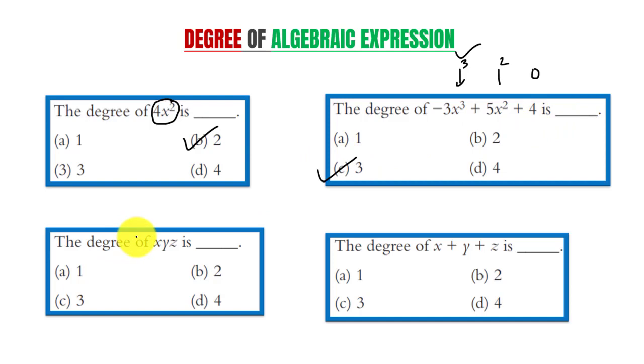Now coming to third question. The degree of xyz is here. Only one term is there. To find degree of such expression we will add exponent of each variable.